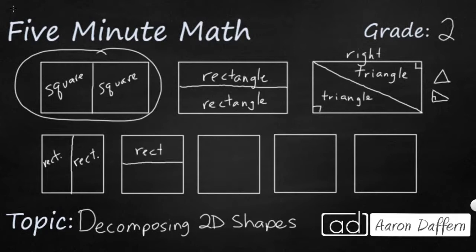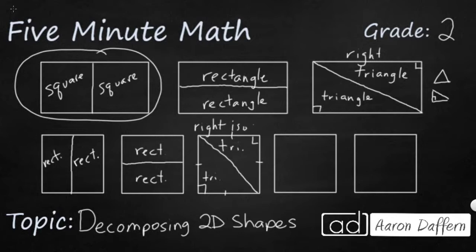You can put two rectangles together and sometimes they will make a square, but not always. Now if I cut the square diagonally, just like I did with the rectangle, I've got two triangles. These are right triangles because there's a square corner, and they are a specific type — a right isosceles triangle, which is something you won't learn until fifth grade. It's called that because it has a square corner and two sides of the exact same length. That's what isosceles means.